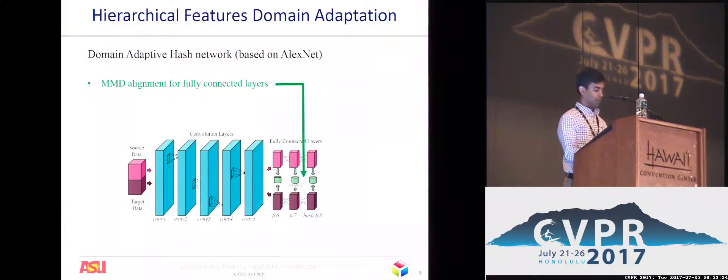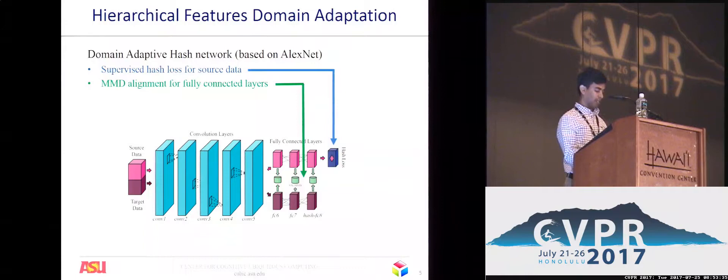The supervised hash loss is estimated only for the labeled source data. This loss ensures category-sensitive hashing, where all images belonging to a category end up with very similar hash values and images belonging to different categories have different hash values.